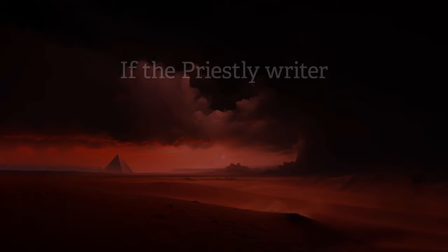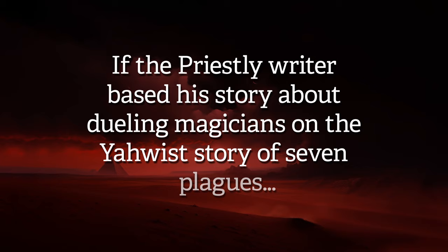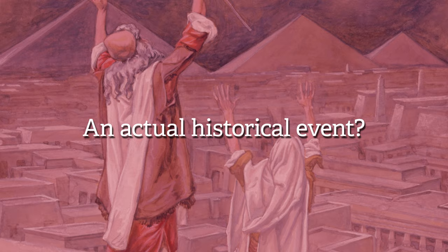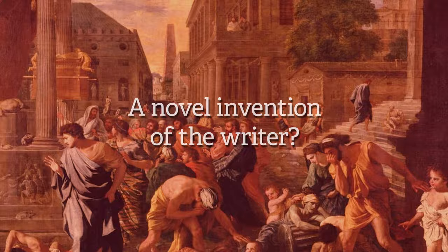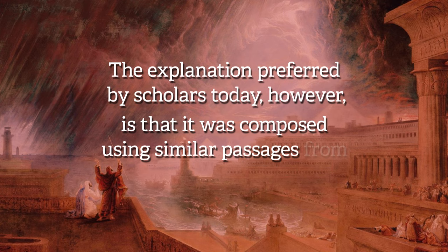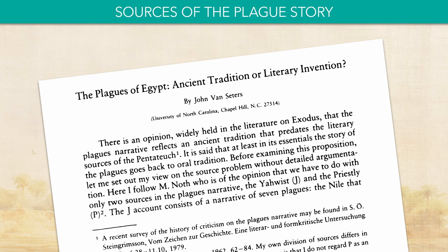So if the Priestly writer based his story about dueling magicians on the Yahwist story of seven plagues, where did the Yahwist story come from? Some might claim it was an actual historical event, an oral retelling of natural phenomena, or even a novel invention of the writer. The explanation preferred by scholars today, however, is that it was composed using similar passages from other parts of the Bible. This was proposed in a landmark 1986 paper by Canadian scholar John Van Cedars, who identified several sources behind the Yahwist plague story.